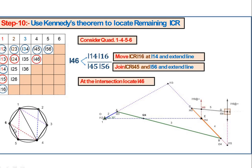To locate I46, join points 4 and 6. On one side use I45 and I56, and on the other side use I14 and I16. Since I16 is at infinity, draw a parallel line from point O or I14. The line through I45 and I56 extended intersects with the line through I14 parallel to I16, giving ICR I46 along the CD line.